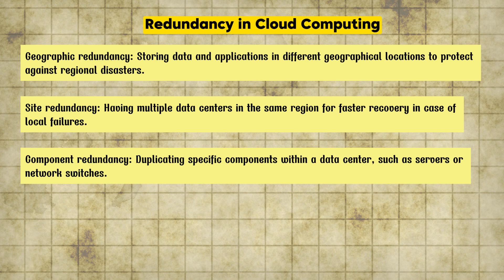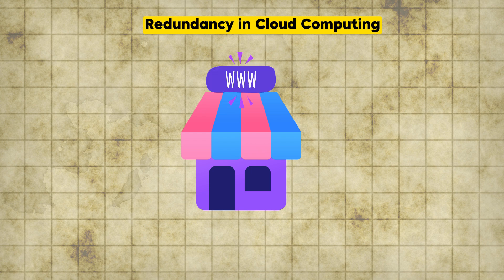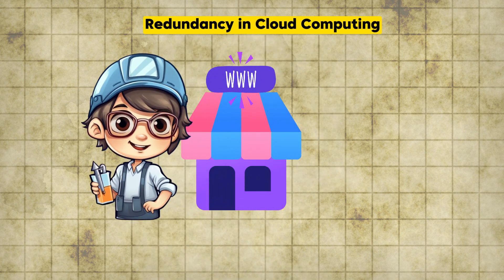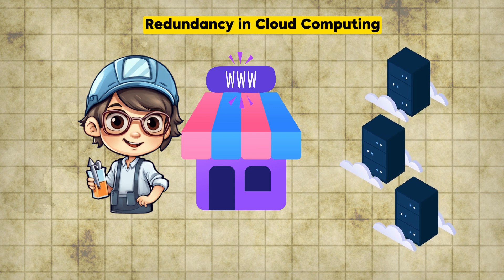If you want to understand any of these concepts in more detail, let me know in the comments. As a quick example of redundancy: suppose you have an online store. As a professional architect you would deploy multiple servers at different locations, back up product data to multiple storage locations regularly, and maintain redundant network connections for failover in case of network issues. This is how you implement redundancy and achieve high availability.